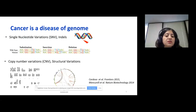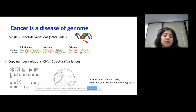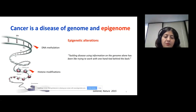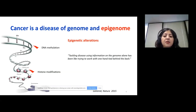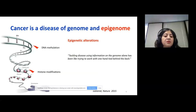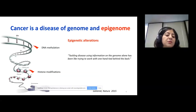We can have structural variations that include translocations, inversions, and all these events might lead to fusion genes, and fusion genes can create some abnormal protein activity. It can lead to very high expression for oncogenes. We said cancer is a disease of the genome, but it's also a disease of the epigenome. It has been shown that epigenetic alterations can lead to cancer initiation and progression.